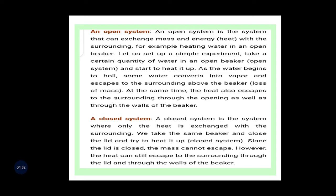When we talk about types of systems, there are three: the open system, the closed system, and the isolated system. An open system is one that can exchange both mass and energy with the surroundings. That means heat can be passed to the surroundings or absorbed from them, and mass can also be exchanged.